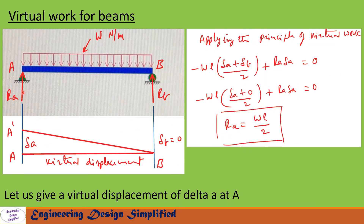Similarly, to find reaction at A (R_A), let us give a virtual displacement of delta_A at A. The beam will assume this position BA prime. Here at B, delta_B equals zero. Applying the principle of virtual work, we write the virtual work equation: minus w into L into (delta_A plus delta_B) divided by 2, plus R_A into delta_A equals zero.